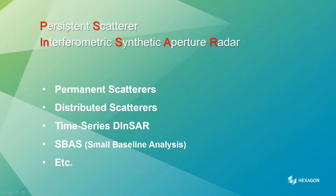You'll see the same technology sometimes called permanent scatterers instead of persistent scatterers — same thing. Sometimes we use distributed scatterers instead of permanent point scatterers. A time series InSAR is sort of the original name because that's what we're looking at: a time series. We can have 10, 15, 20, 30, or 40 images collected over a period of time, and we look at that time series to understand what's happening at a particular point. Sometimes you see this called SBAS — Small Baseline Analysis — really just another way of analyzing this time series InSAR. All these names refer back to the same technology.